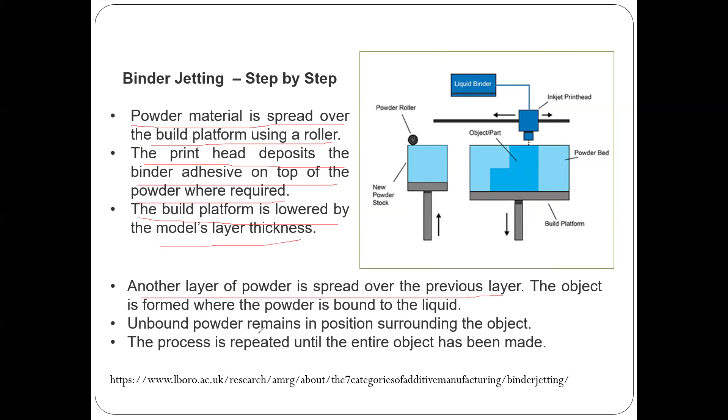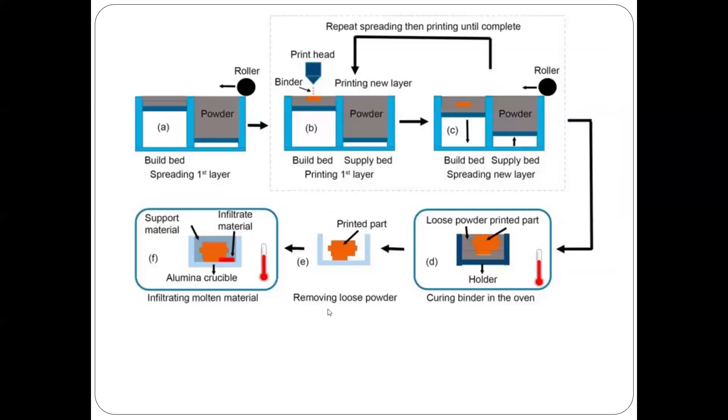Unbound particle powder remains in position surrounding the object. The process is repeated until the entire object is made. This is pretty much the same as I explained in the previous schematic diagram - here I'm showing diagrams taken from different sources.